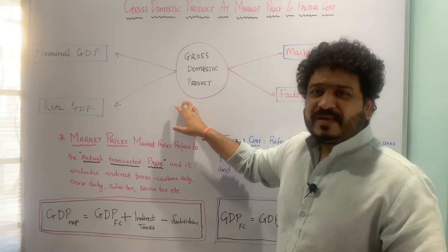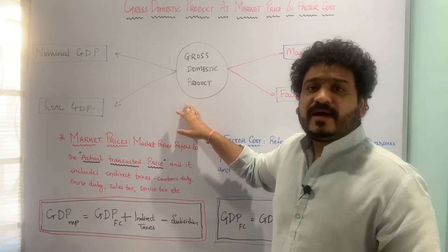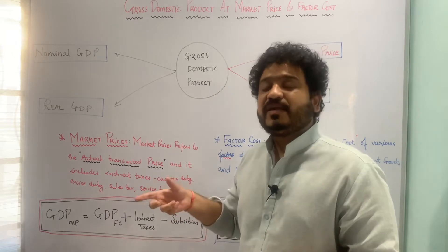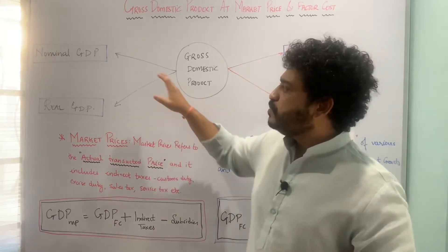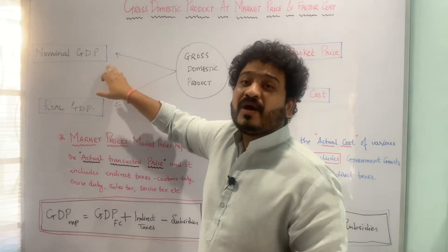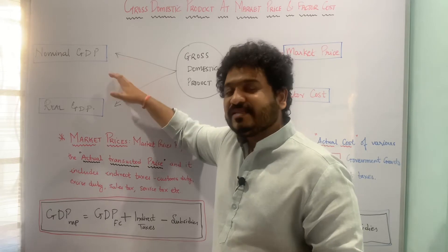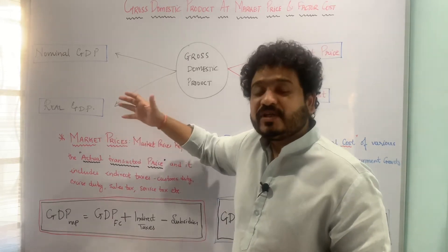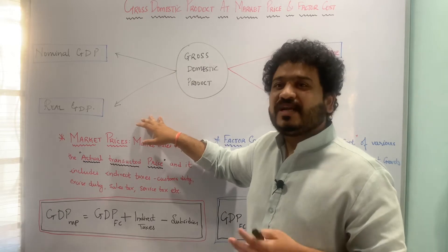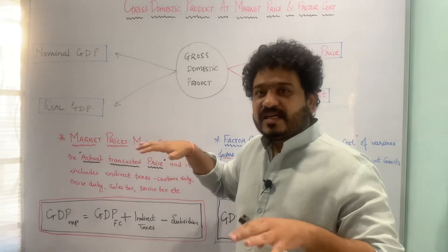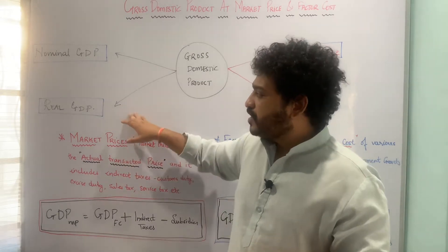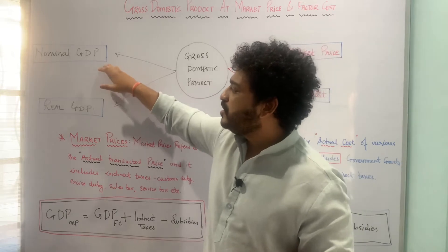GDP is defined as the market value of all final goods and services produced within the territory of a country in a given period of time, usually one calendar year or one financial year. Nominal GDP refers to the valuation of the current year's production at current year's prices, while real GDP looks at the valuation of current year's production at base year prices. The base year is selected as a normal year where political and economic stability are taken into consideration.